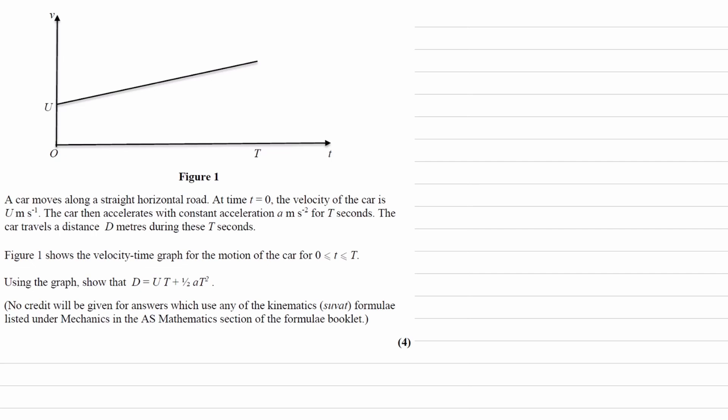We have a graph of velocity against time. There's a constant gradient, so therefore there's a constant acceleration. We're told that a car moves along a straight horizontal road. At time t equals 0, the velocity of the car is U. The car then accelerates with constant acceleration A for T seconds. The car travels a distance of D during these T seconds. We have the velocity time graph above, between 0 and T.